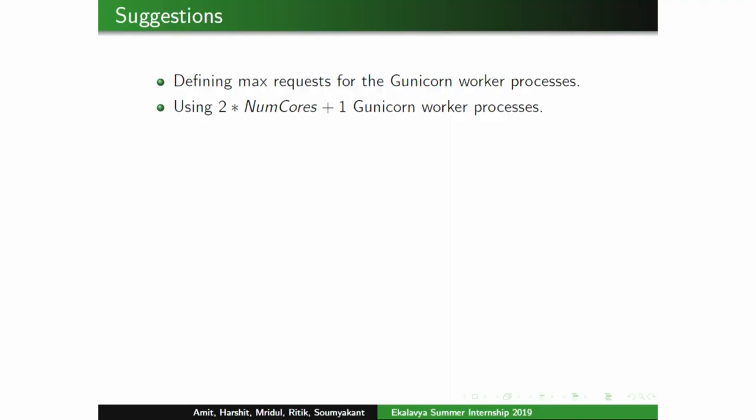We checked the number of Gunicorn workers on the native installation and found more than 10. It is recommended to have 2 times the number of cores plus 1. Since memory consumption for Gunicorn was very high, we suggest capping the maximum requests going to Gunicorn worker processes as a performance optimization.